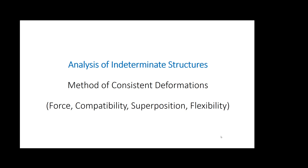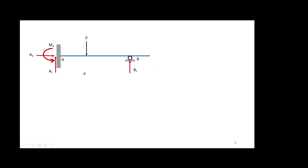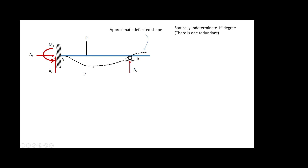We calculate some coefficients of flexibility. Let's start — imagine you have this type of structure. This structure is statically indeterminate of first degree. You can see that because you have three plus one, four reactions, and only one member from which you can extract equations. This is going to be the approximate deflected shape for that member.